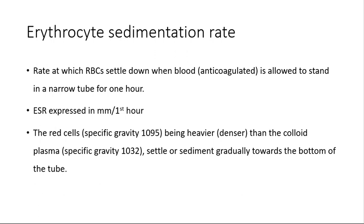The red cells settle down because the red cells and the plasma have different specific gravity. The red cell specific gravity is 1.095, being heavier than the plasma whose specific gravity is 1.032. That's why the red cells settle toward the bottom of the tube and the plasma rises upward. This is the mechanism behind ESR.